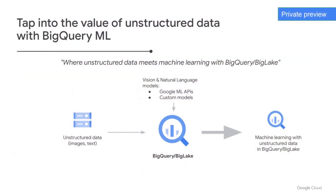What else might be new? How about tapping into the value of unstructured data using machine learning where your data is stored in your data lake? You can have data stored in Google Cloud Storage — like your images and text files — make them accessible in BigQuery or BigLake, and apply machine learning models directly where the data is stored.